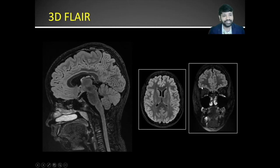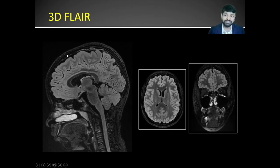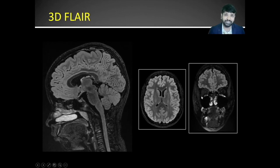3D FLAIR can cover the orbits, the paranasal sinuses, the neck spaces, and even the superior aspects of the cervical spine. Additionally, 3D FLAIR suppresses the fat signal, so any bright signal in the parenchyma, sulcal spaces, calvarium, or even the orbits can be picked up using the 3D FLAIR sequence.